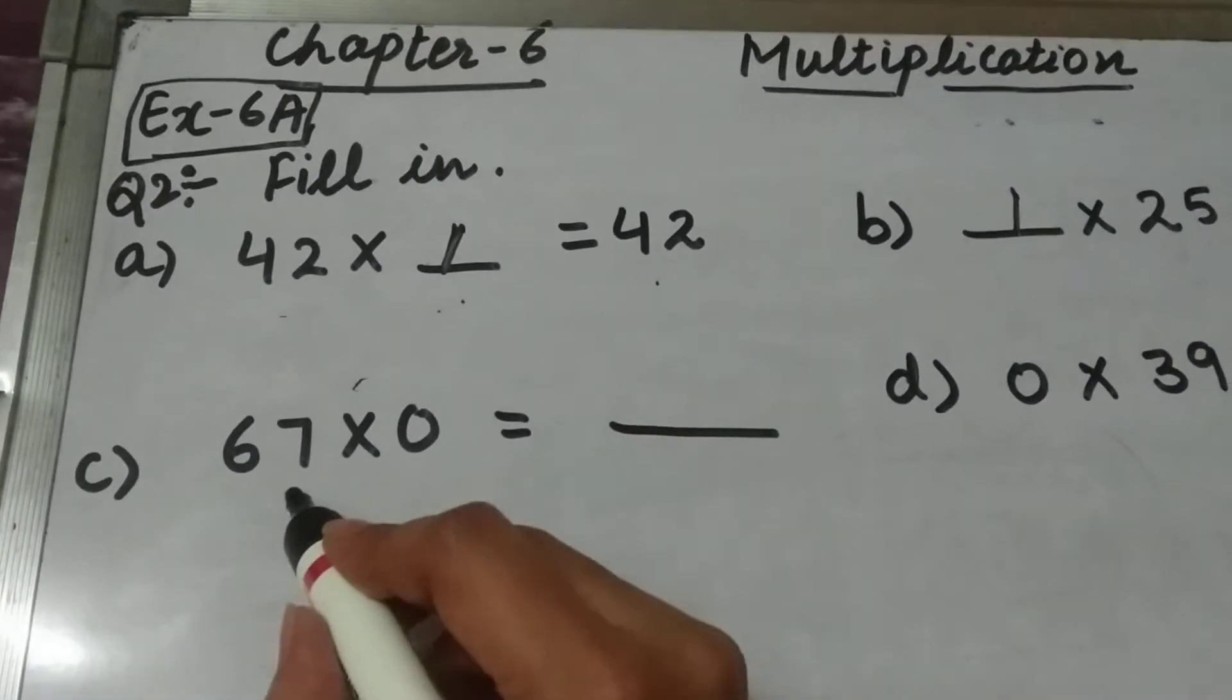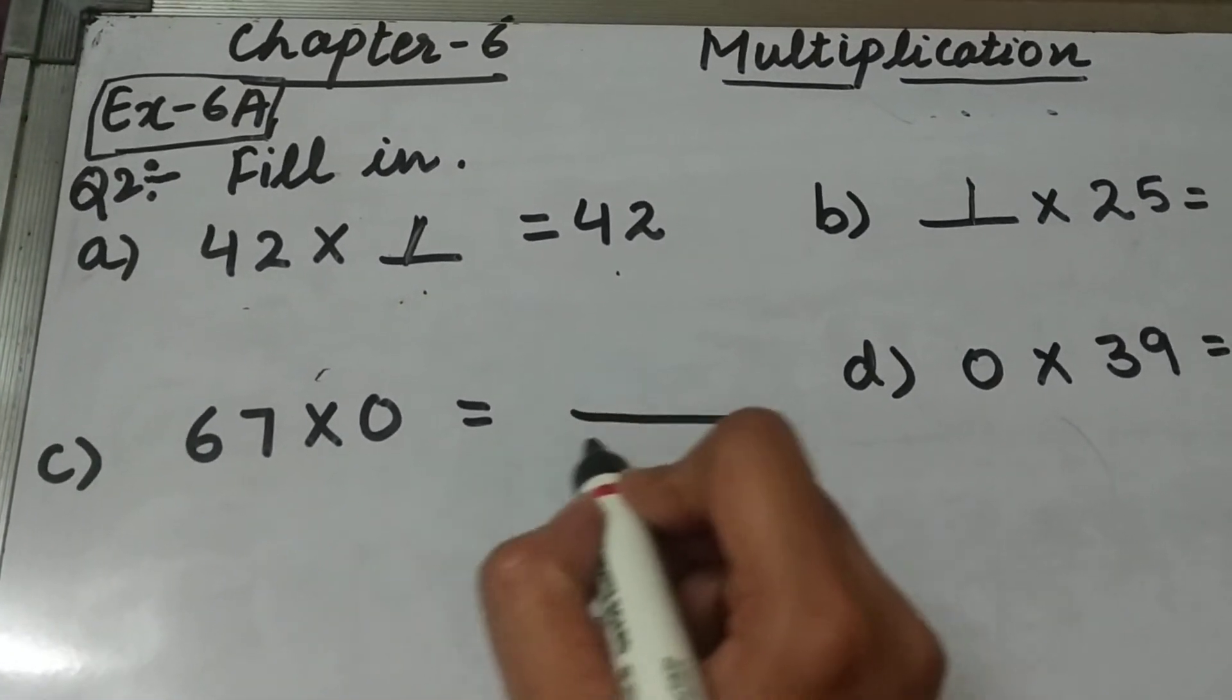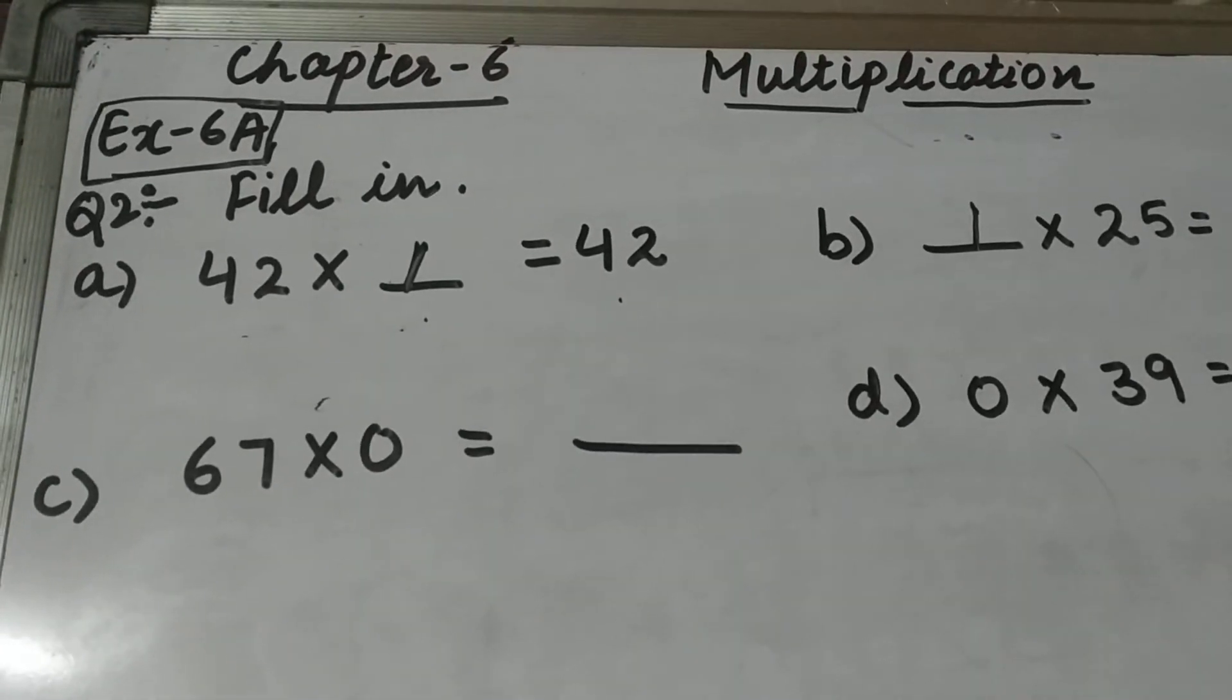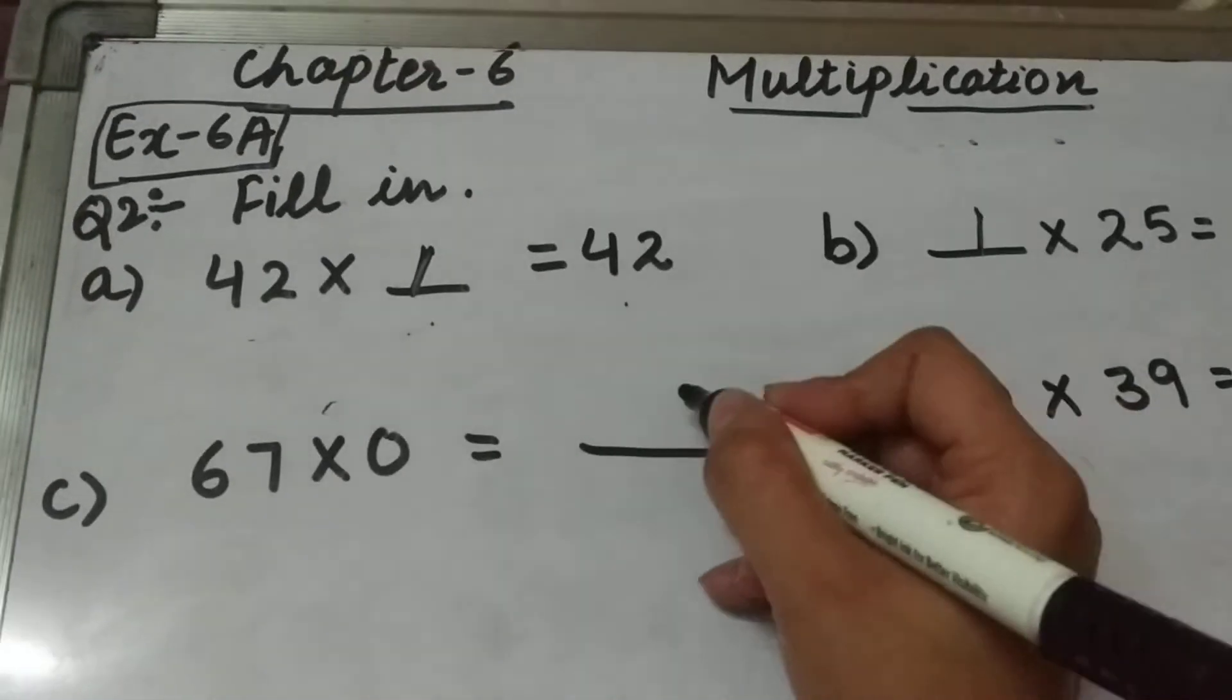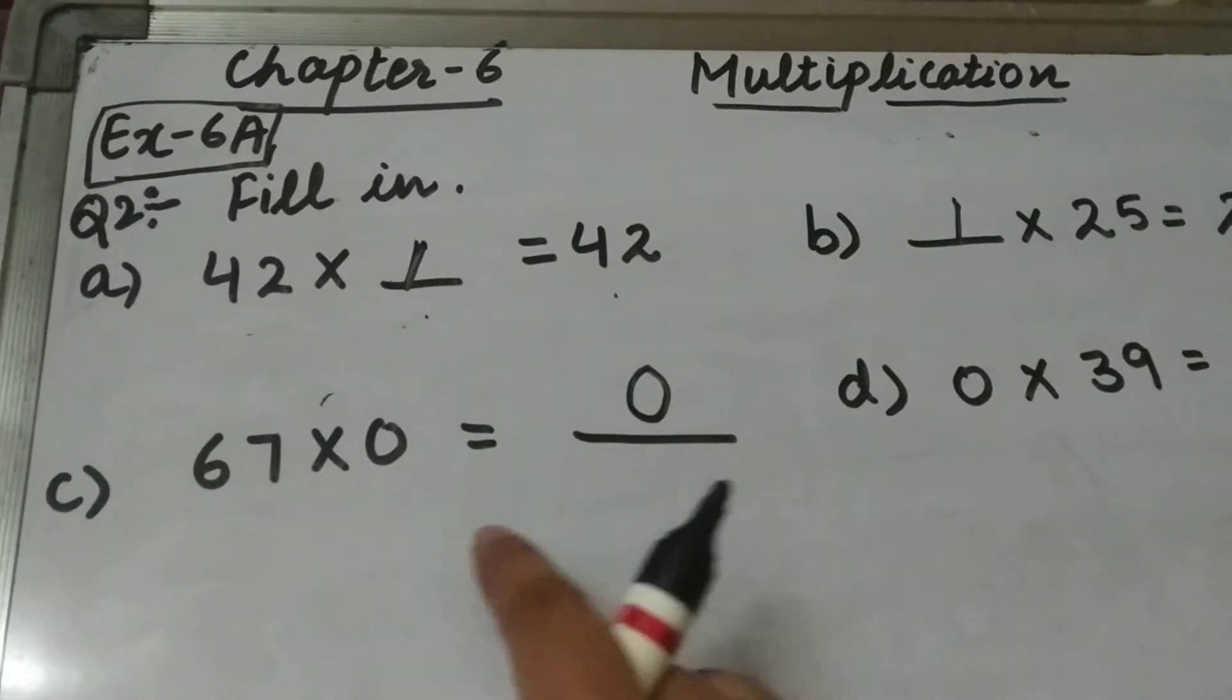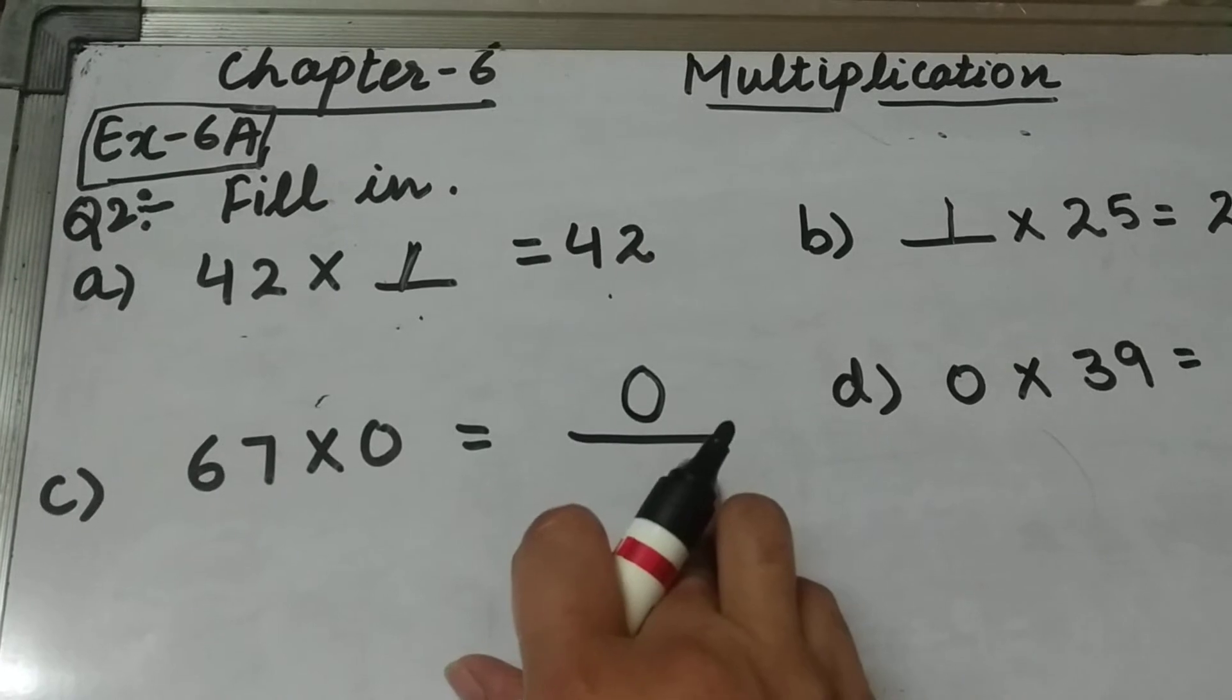Part C is 67 multiplied by 0 is blank. When we multiply any number by 0, we always get 0. So in this case, the answer will be 0.